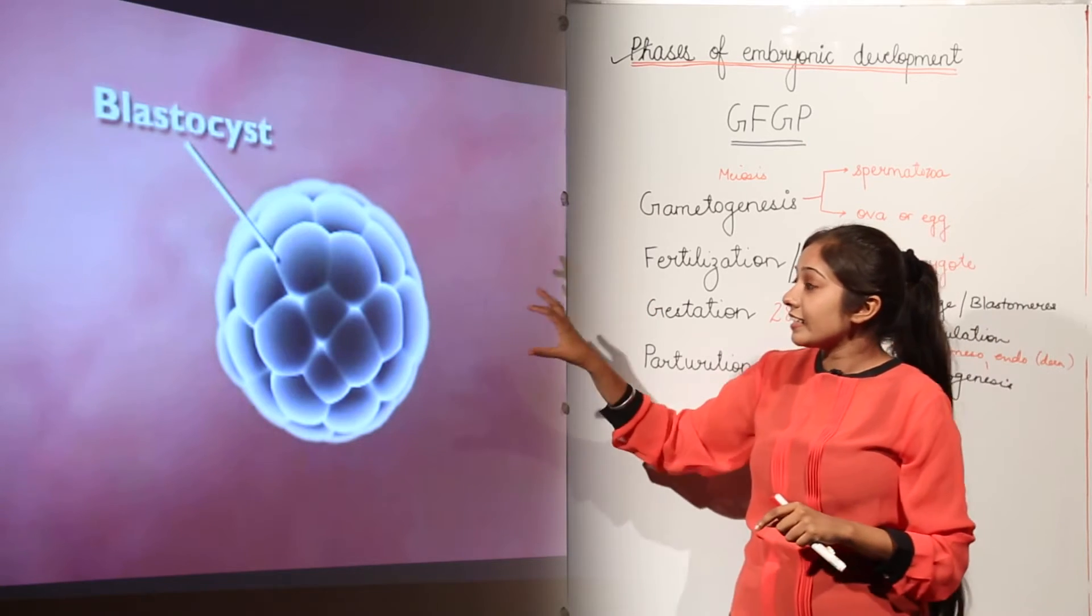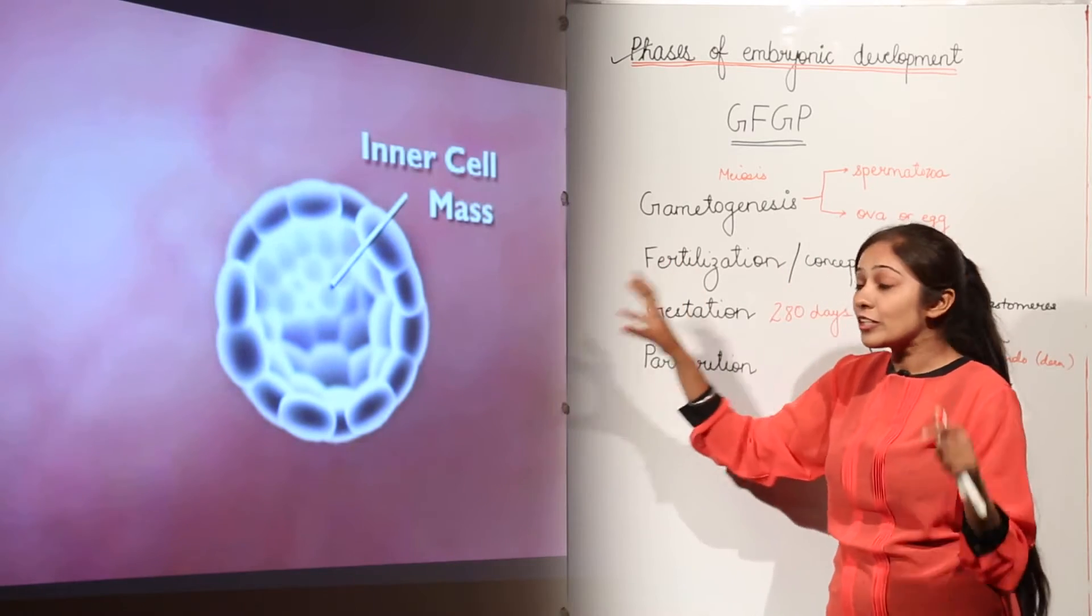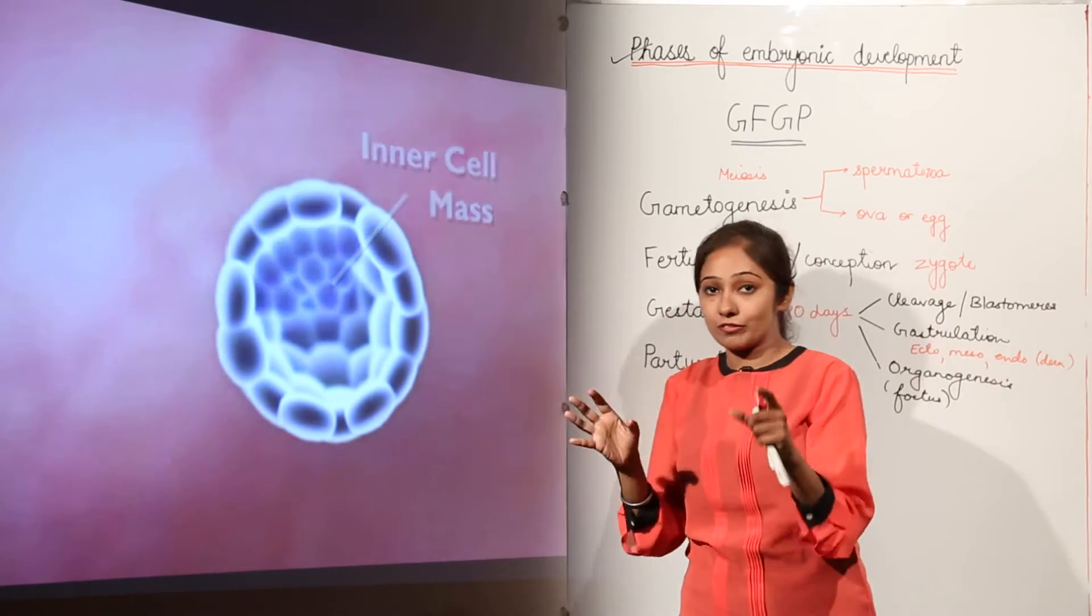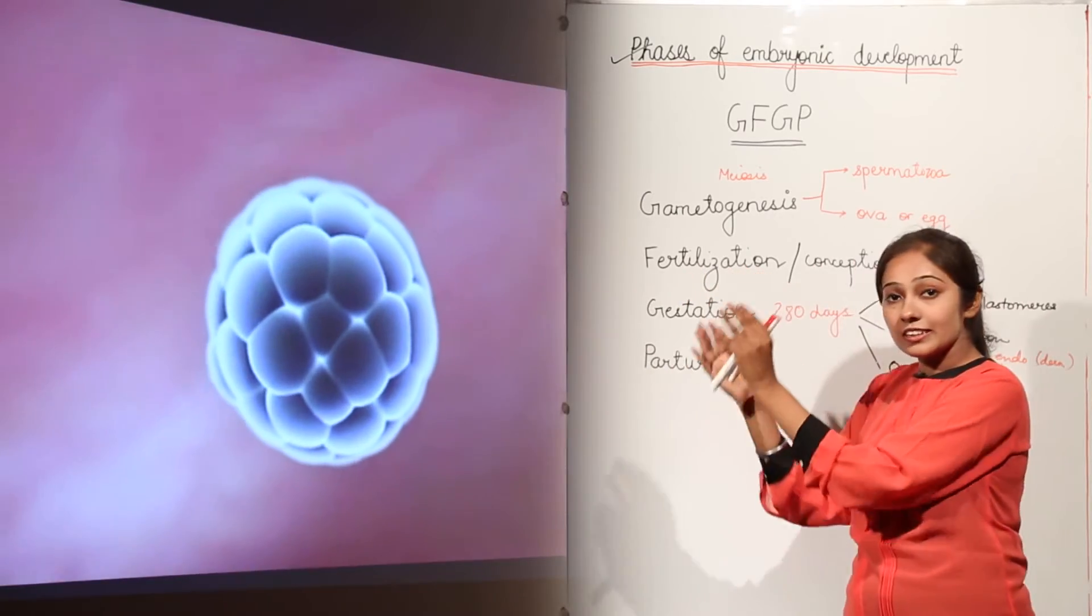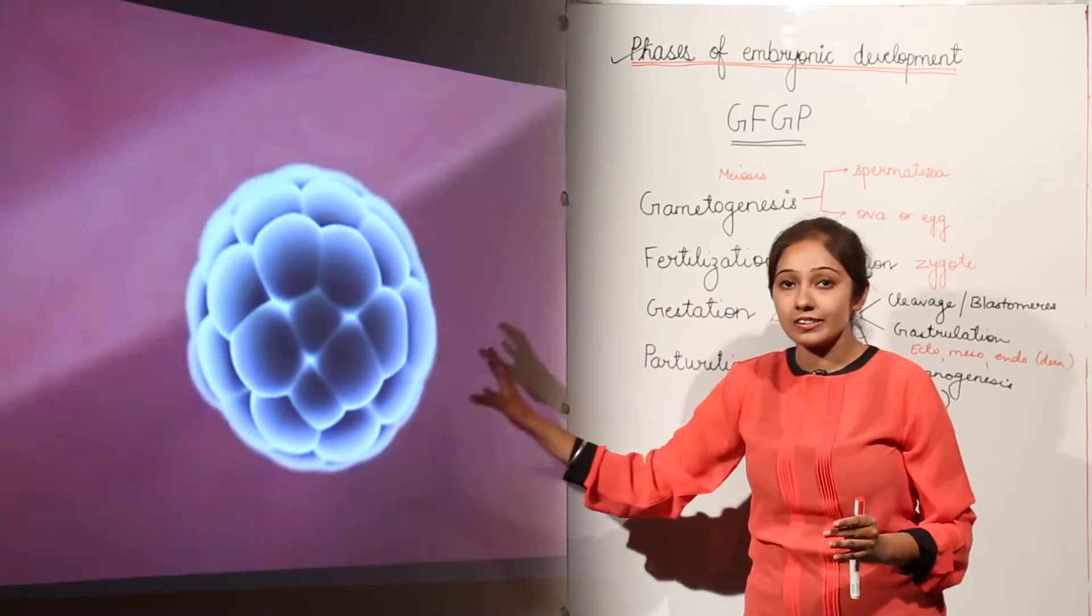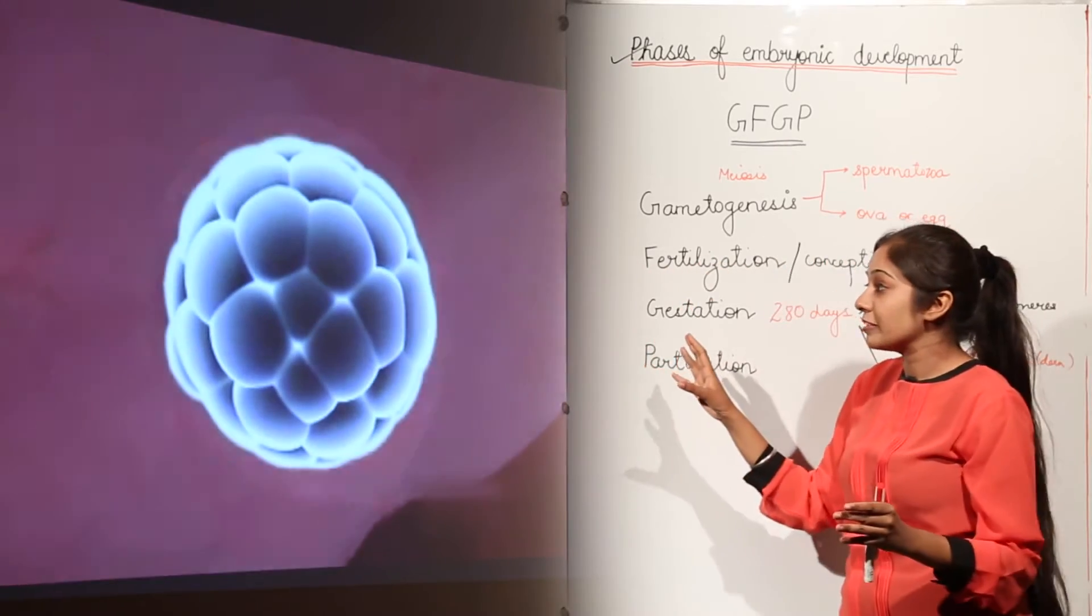And inside this, we have inner cell mass which we call as ICM also, which are going to form the entire mass of the body. So this blastomere, this multicellular cell stage is going to implant itself to the uterus, the uterine wall of the human female.